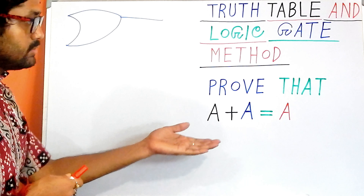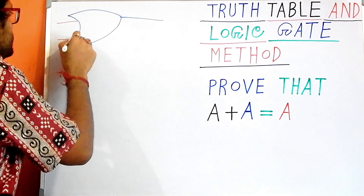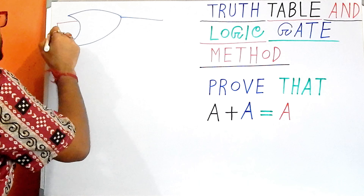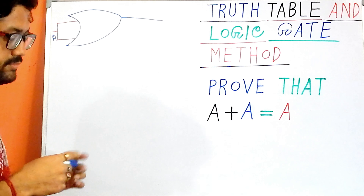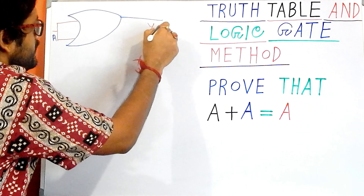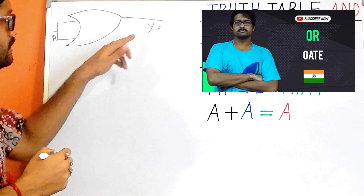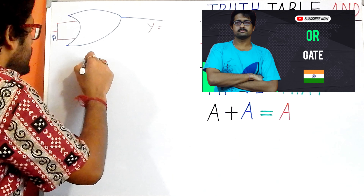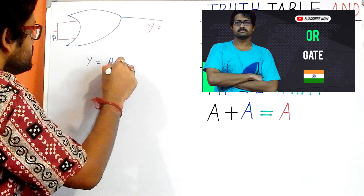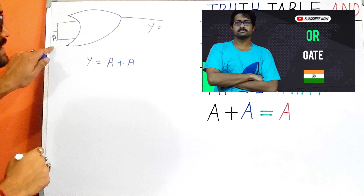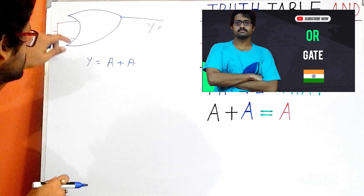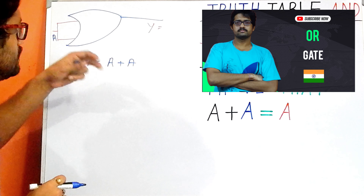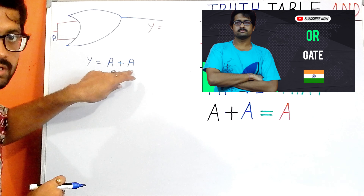The two inputs of the OR gate are the same type — both inputs are A. So this is our A, and if this output is Y, I need to find out the value of Y. Let us write the equation: this is our equation which is A plus A, meaning A OR A, and this is our output expression.